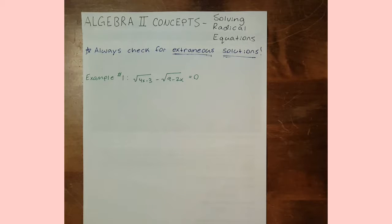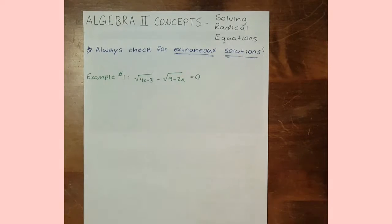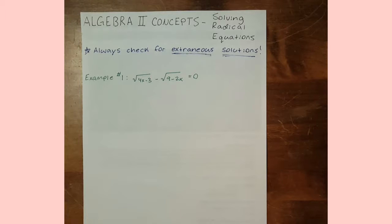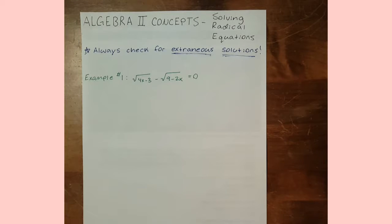The most important thing to remember when solving radical equations is to be checking for extraneous solutions. An extraneous solution is a solution that you get when you solve the problem that doesn't actually work for the equation. At the end of this example I'll show you what that really means.